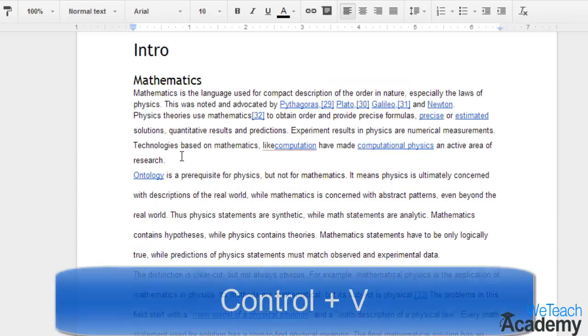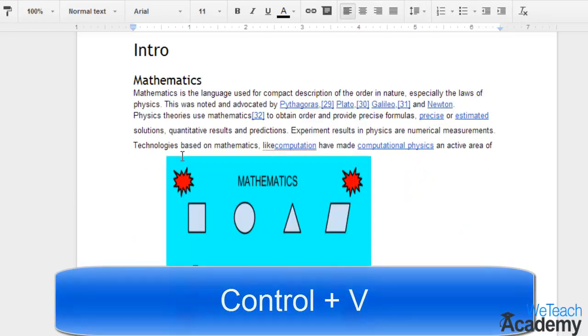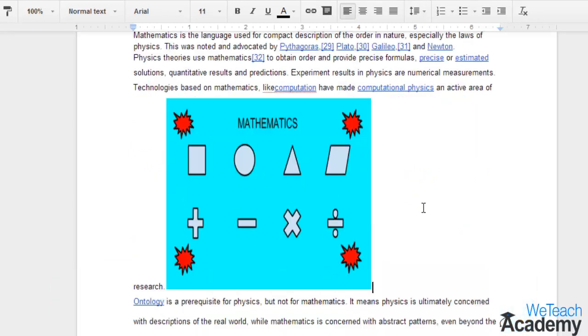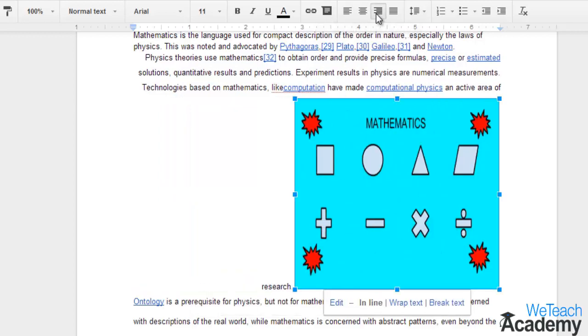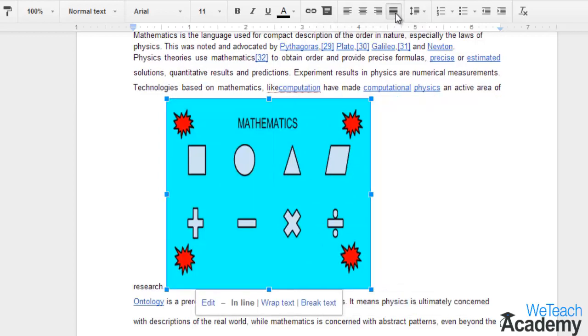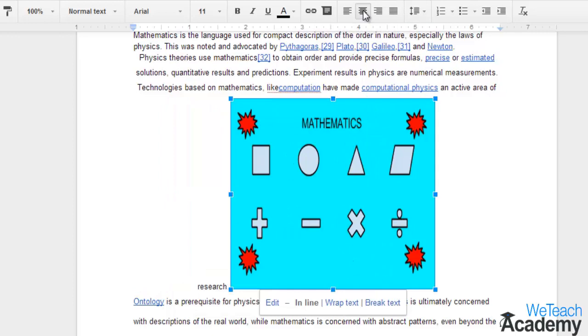Press Ctrl+V to paste it in that new position. One thing to note here is that when an image is inline with text, it is subject to the same alignment and spacing controls that are already set for your text. If you wish to have the image in a fixed position, select 'wrap text'.